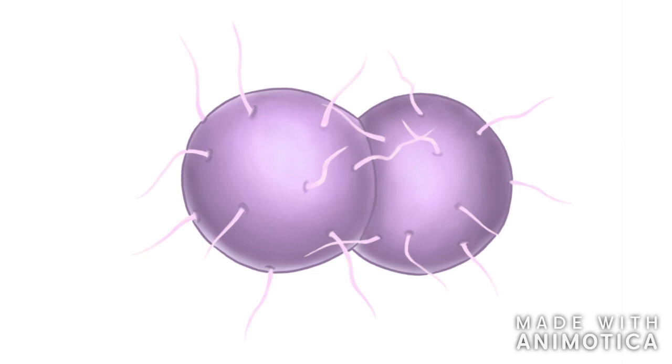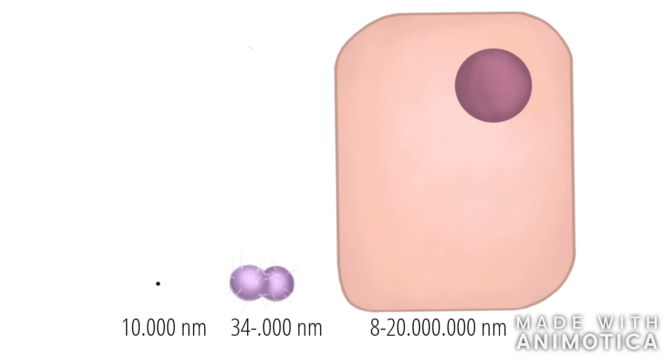Neisseria meningitidis can only affect humans and can cause severe damage in the brain and even death. For the rest of the video, we will refer to Neisseria meningitidis as Neisseria. Keep in mind that the proportions in this video are incorrect. In real life, a bacteria is extremely small even compared to human cells.